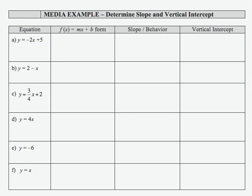We're asked to determine the slope and vertical intercept for each of a series of equations listed on the left-hand side. To do that, we're going to write each equation in f(x) = mx + b form.